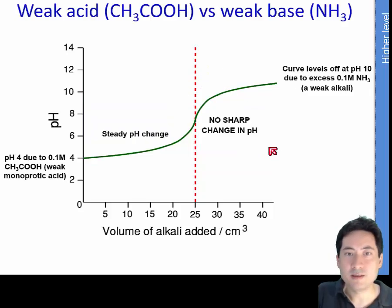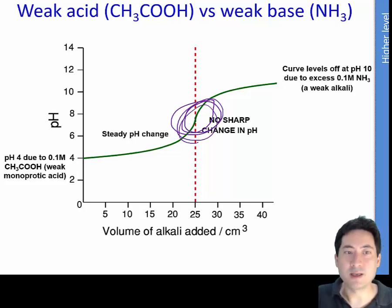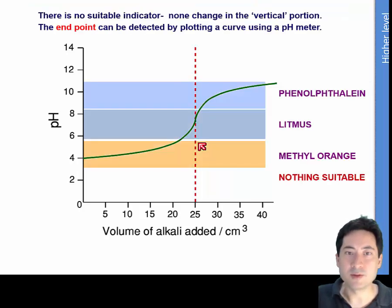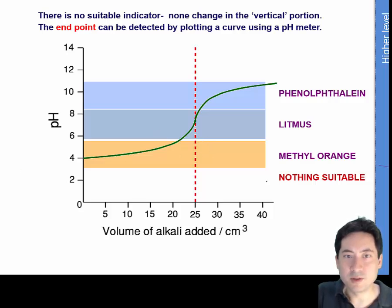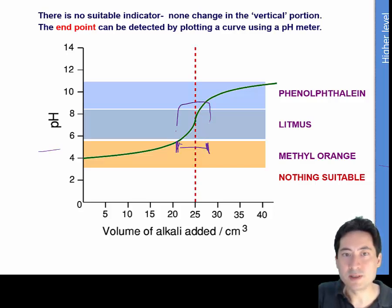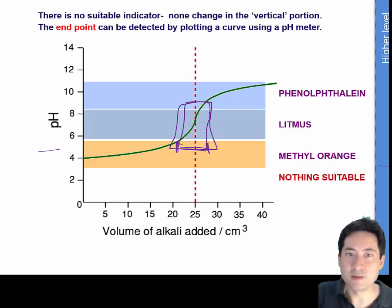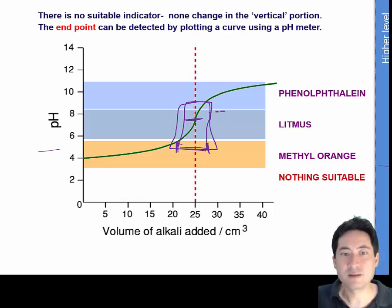For a weak acid and weak base: it's very difficult to find where the inflection is. There's a huge range of volume over which you might detect a colour change, making any indicator unreliable. The only practical approach is to use a pH meter and work this out graphically rather than trying to guess the colours.